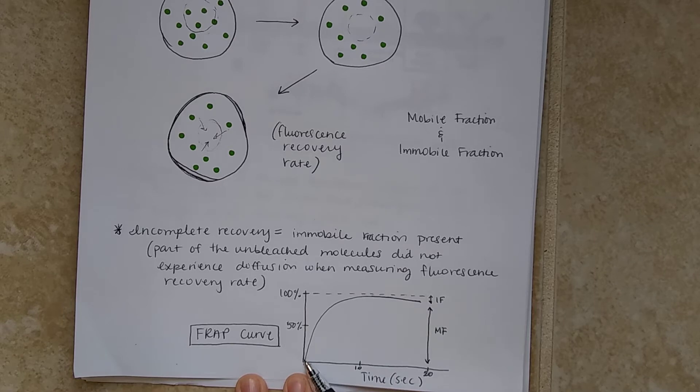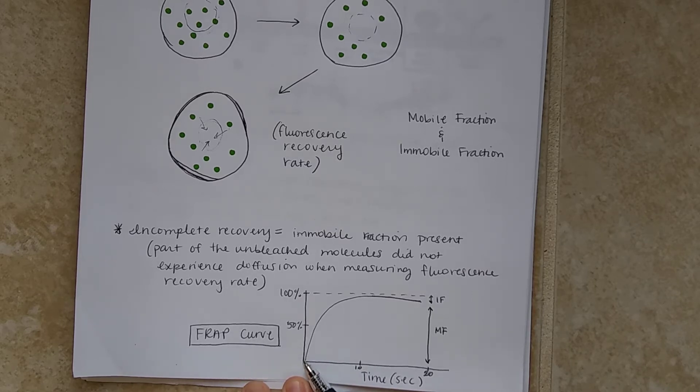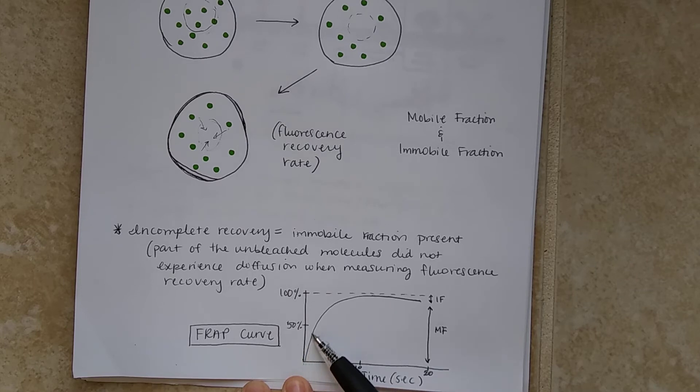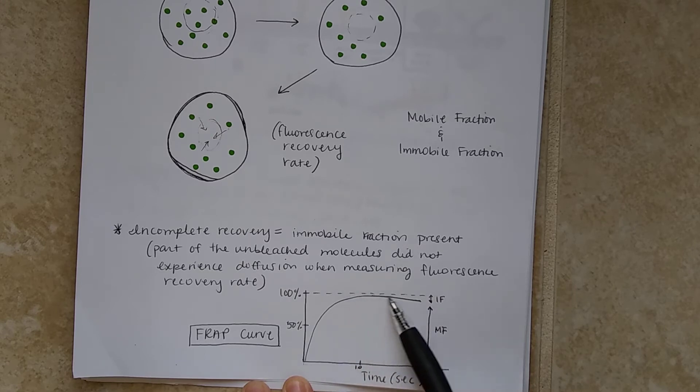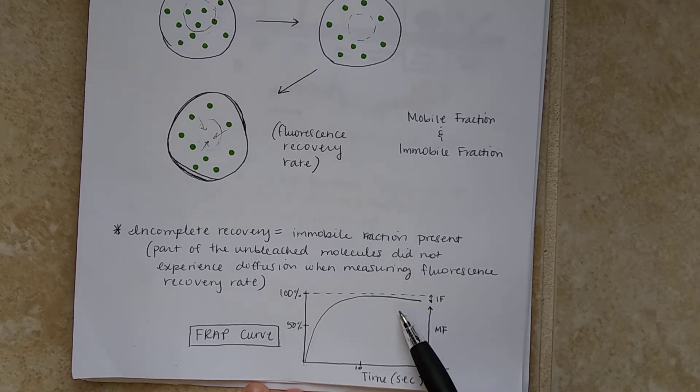So once it is bleached, we can see that there is no fluorescence being expressed. And this is called a FRAP curve. Once it is going into, as the time progresses, we can see that the recovery of the fluorescence does, in fact, occur.